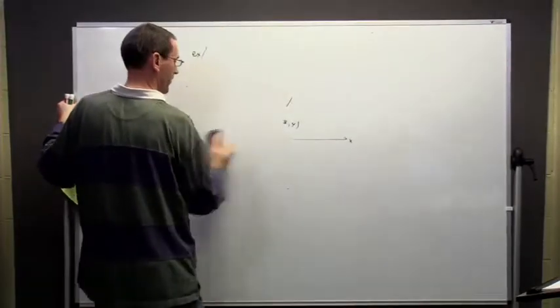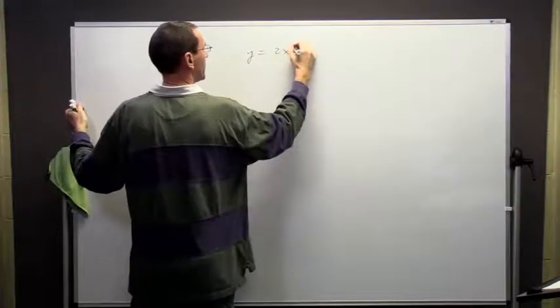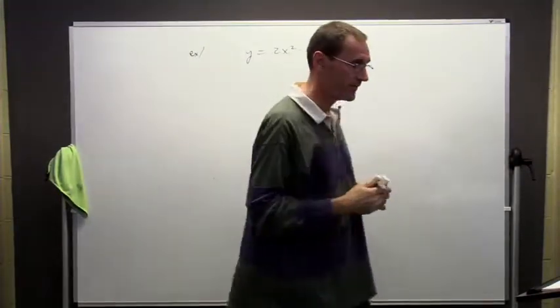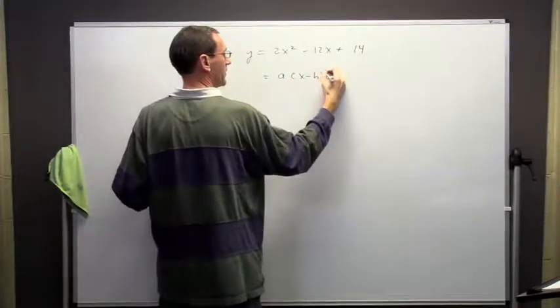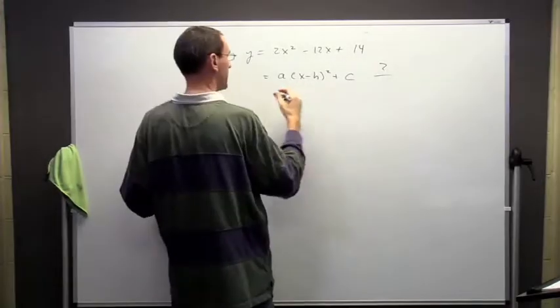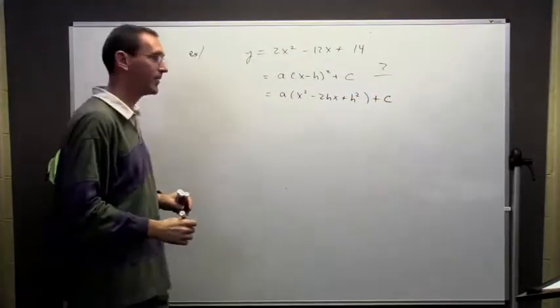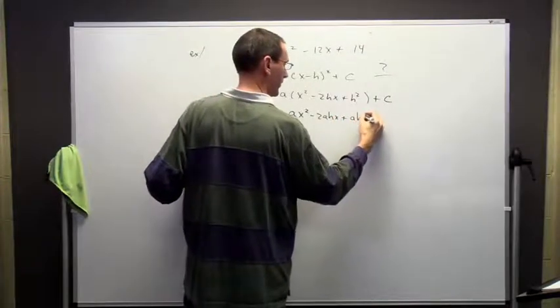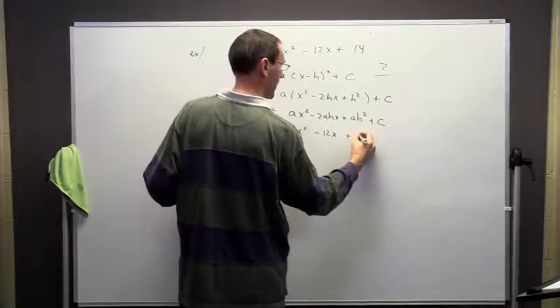All right, I'm going to start an example, but I'm not going to finish it. I'm going to motivate this idea of how do we go from a general form to the vertex form. Okay, so suppose I have this equation here. The question is, can I write it in that form? If so, I would like to know what the a, h, and c is. Let's do this, let's expand this out. So I'm going to FOIL this. So I'm going to get that. I'm going to multiply through by the a, and I get that expression.